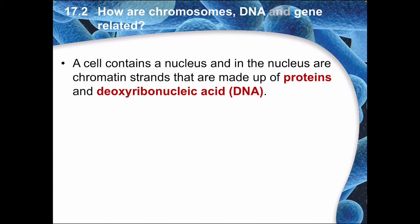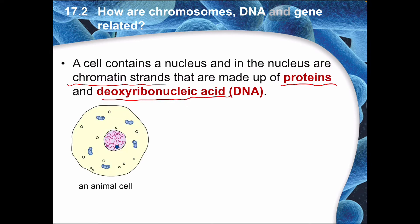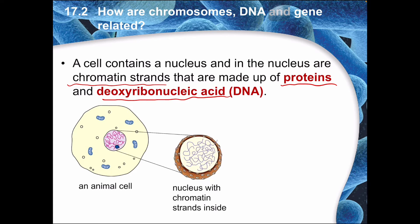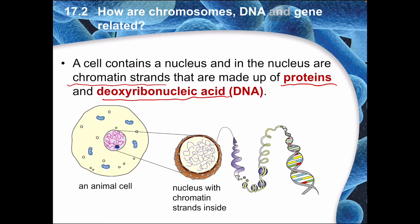Inside a cell you usually have a nucleus, and within a nucleus you have these things called chromatin strands — you should remember them from your earlier chapter on cells. These chromatin strands actually contain deoxyribonucleic acid, known as DNA, but they also have proteins, so it's not purely DNA. Think of it as strings inside the cell; those are called chromatin strands. If you zoom in a bit you'll see they are very thin strings of information, and if you zoom in further you realize each string is actually made up of a DNA molecule.